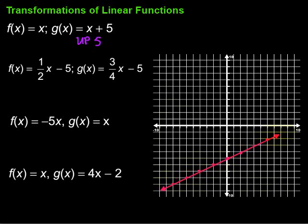For the second equation in this example, we also start at the y-intercept, which is also negative 5. My slope in this case is 3 over 4. So I go up 3 over 4 to get the next point, and I can go down 3 over 4 as well to get points in the other direction.